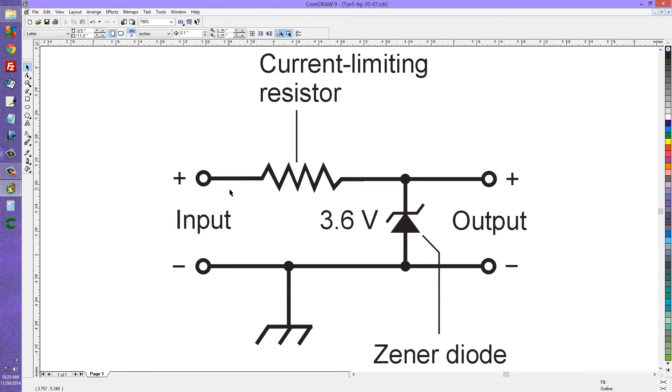As for the other direction, electrons trying to flow this way, you are going to have the problem of this being a positive polarity and this being a negative polarity so you are not going to even have that issue. There is going to be no issue with that kind of conduction.